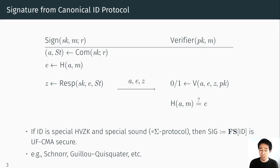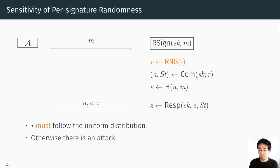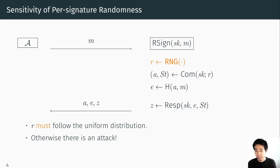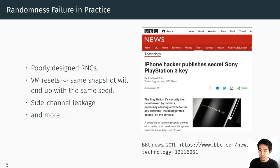If you implement a Fiat-Shamir type signature in practice, you really have to be careful about the randomness used in the signer. If the signature relies on a random number generator, then R really has to follow the uniform distribution, because otherwise the security proof doesn't hold. Not only that, but there's actually a concrete attack exploiting randomness bias, and in practice this randomness failure is a very common vulnerability.